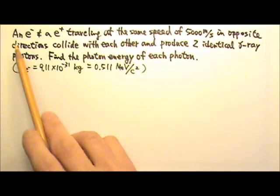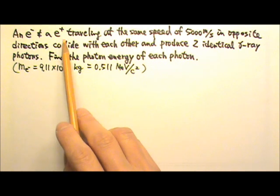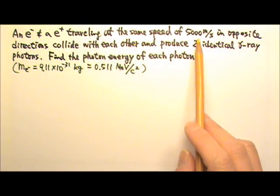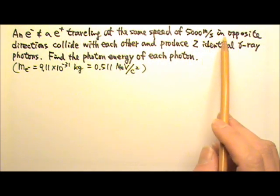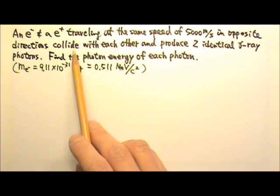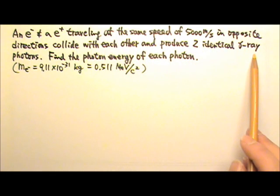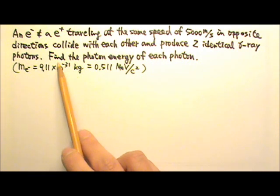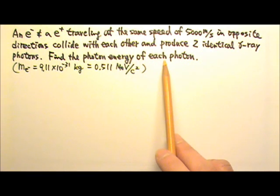Now let's try this problem. An electron and a positron traveling at the same speed of 5000 meters per second, but in opposite directions, collide with each other and produce two identical gamma ray photons. Find the photon energy of each of those two photons.